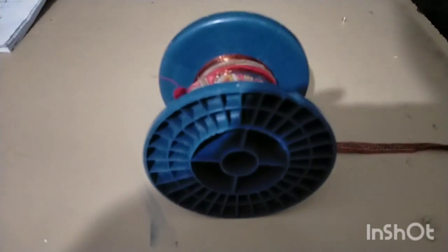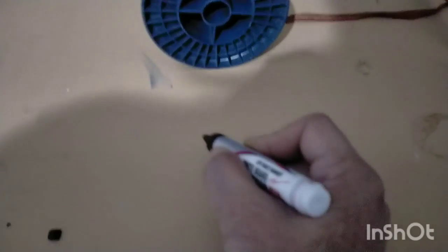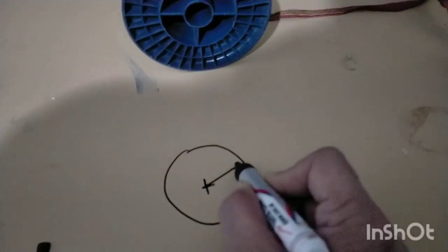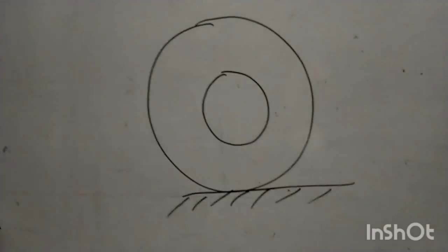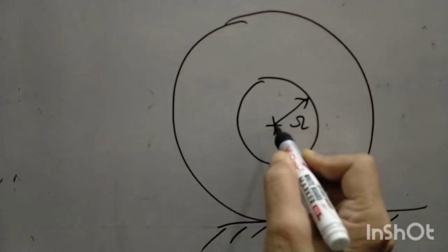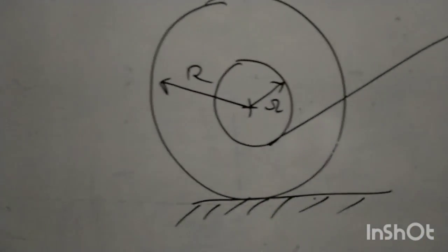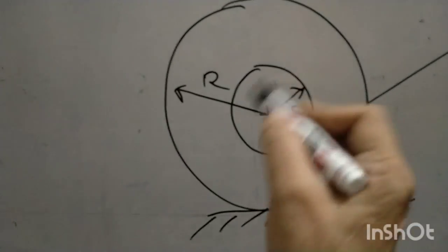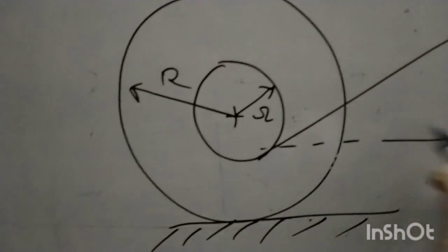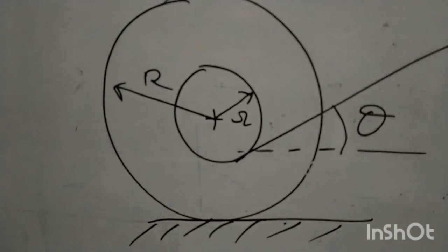This is a spool and I will show you very interesting things about its motion. Let me explain on the diagram first. We have a spool which has inner radius r and outer radius R. We have a thread tied to the inner part of the spool at the small radius r, and we are applying a force. This force can be applied at various angles.